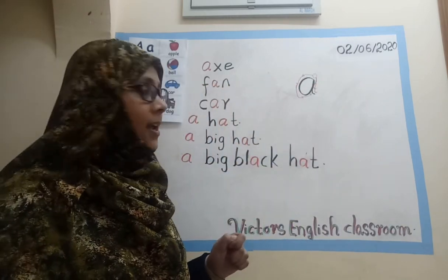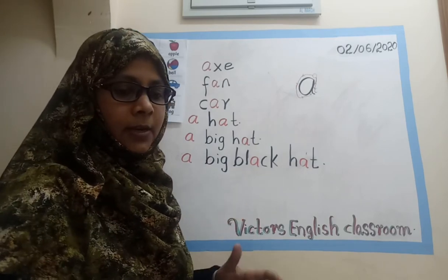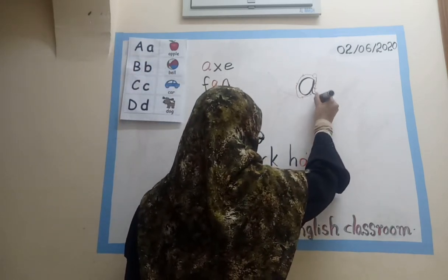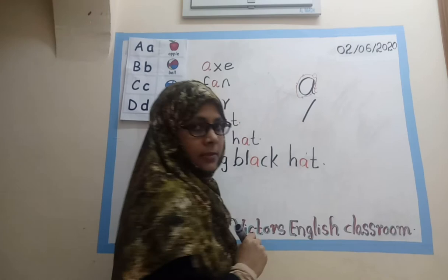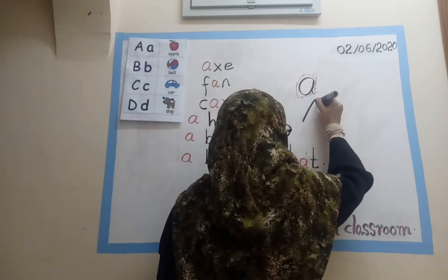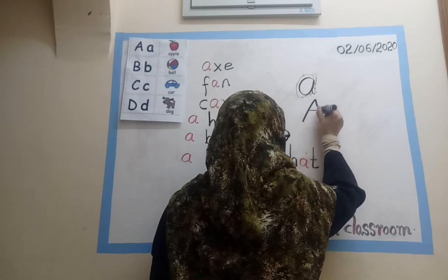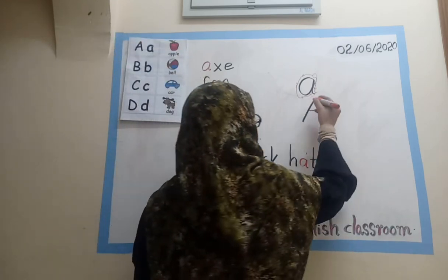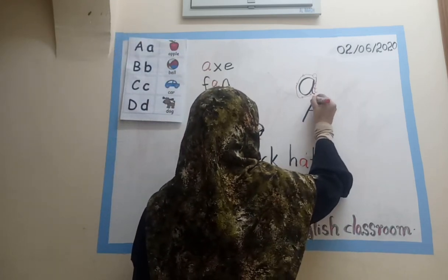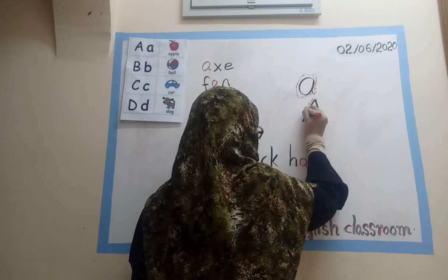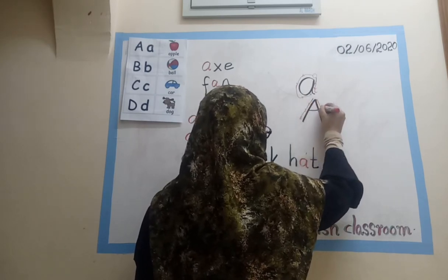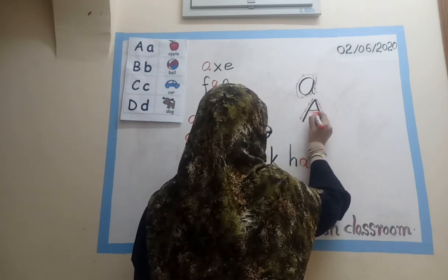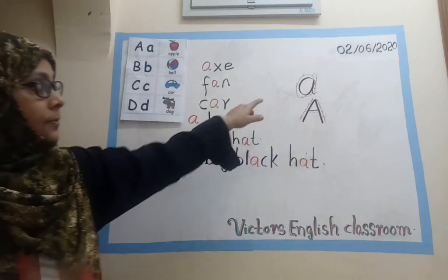Yeah, you got the right — the capital letter A. How we write it: first, throw a line. Then top to down. Cross the lines. I will show you the arrow. Start from the top, then cross the lines.